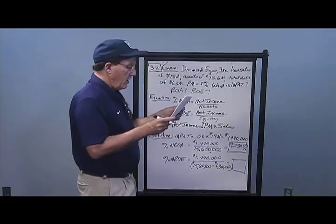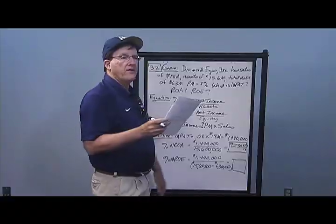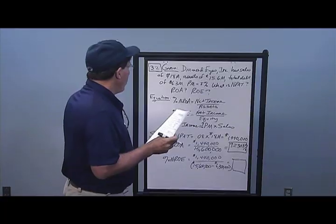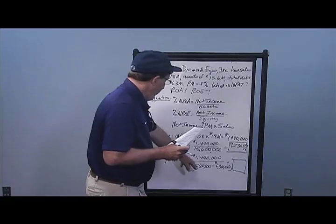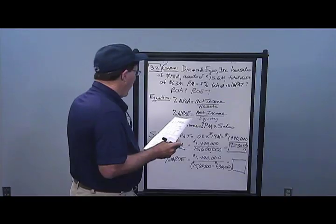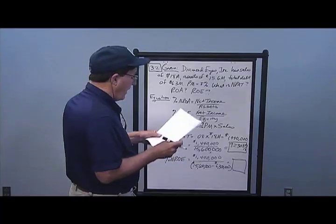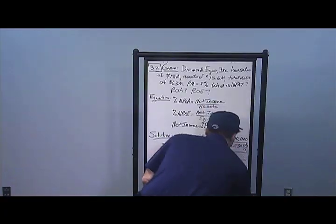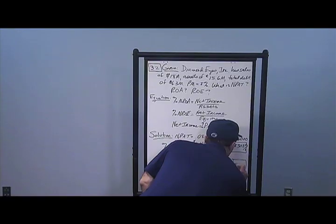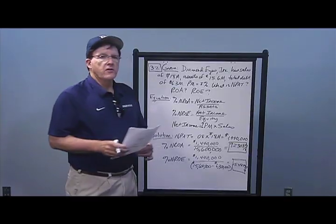For net return on equity, I take net income over equity. Equity must be calculated by taking total assets minus total liabilities. So I take $15,600,000 of assets minus $6.3 million of total debt, and I get a return on equity of 15.4839%. Those are the two answers for Problem 2.